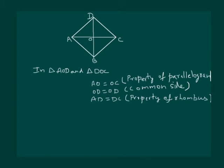So we have that triangle AOD is congruent to triangle DOC by SSS property. Now if these two triangles are congruent,